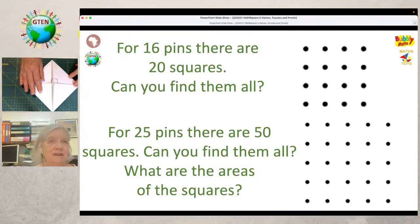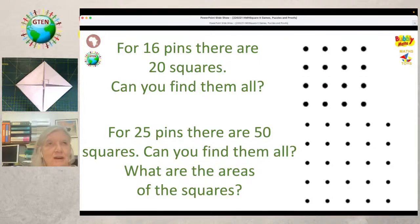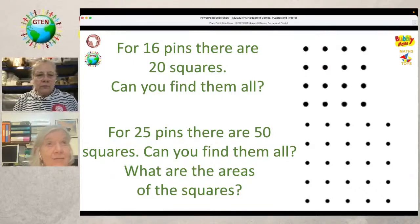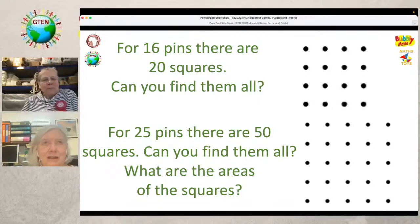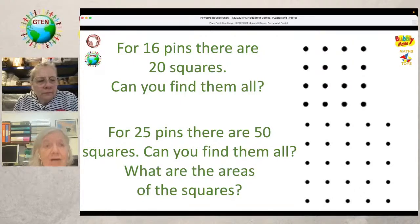It's amazing what you can learn just by folding paper — a bit like origami. Rather than telling children the properties of a square, they can discover them for themselves. Now: with 16 pins there are 20 possible squares — can you find them all? That's a challenge. And with 25 pins there are 50 squares altogether. Instead of sudoku or a crossword, have a go at finding them all — it's a great exercise in being systematic.